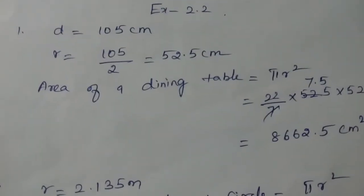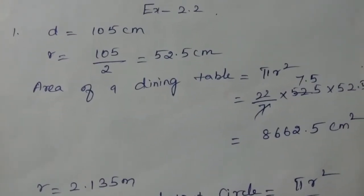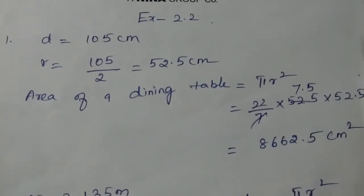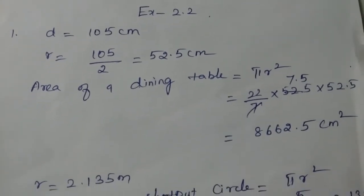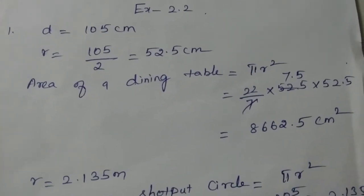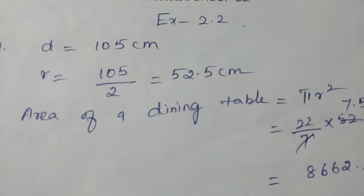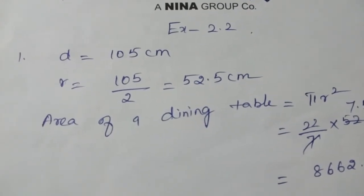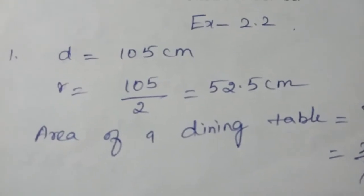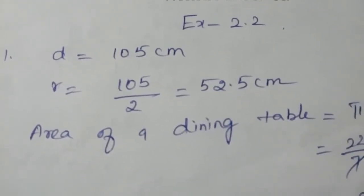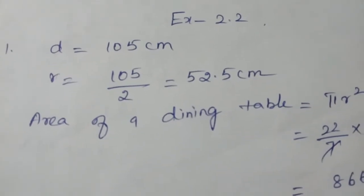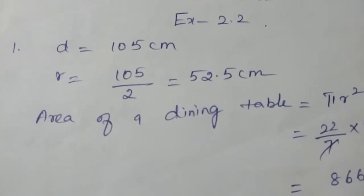Good morning students. Exercise 2.2, first question: find the area of the dining table whose diameter is 105 centimeters. It is given that the diameter is 105 centimeters, so we have to find the radius. To find the radius, we halve the diameter.